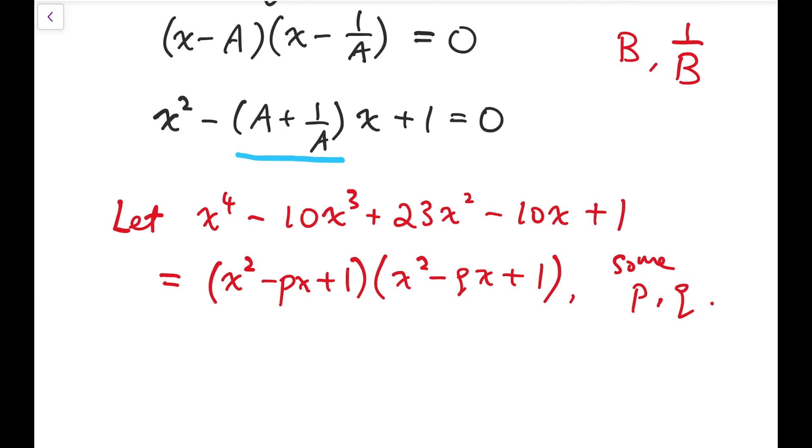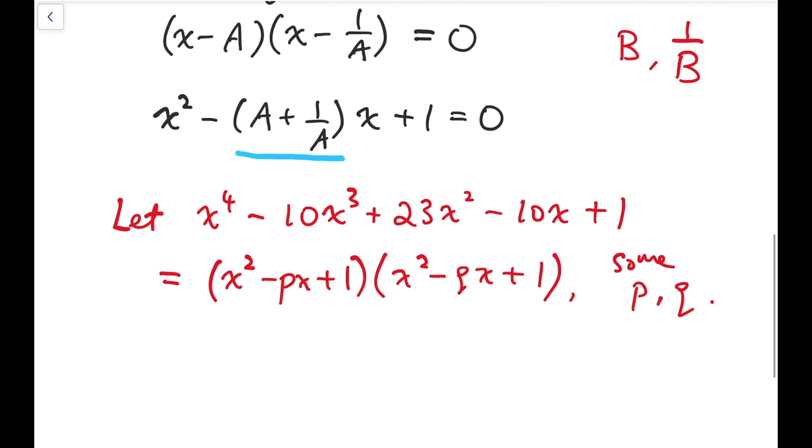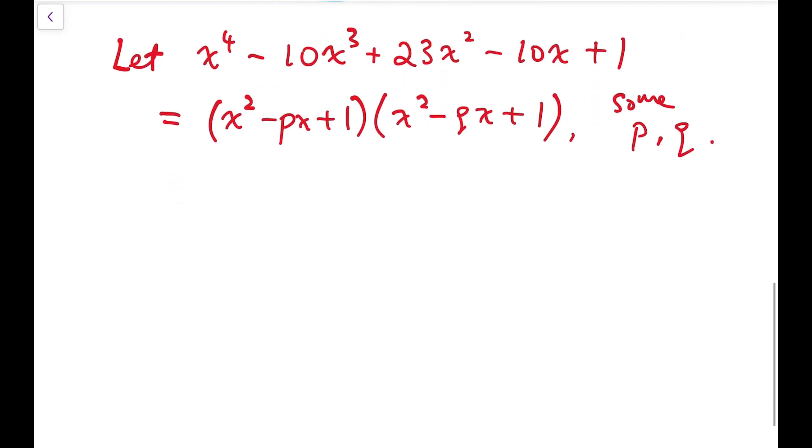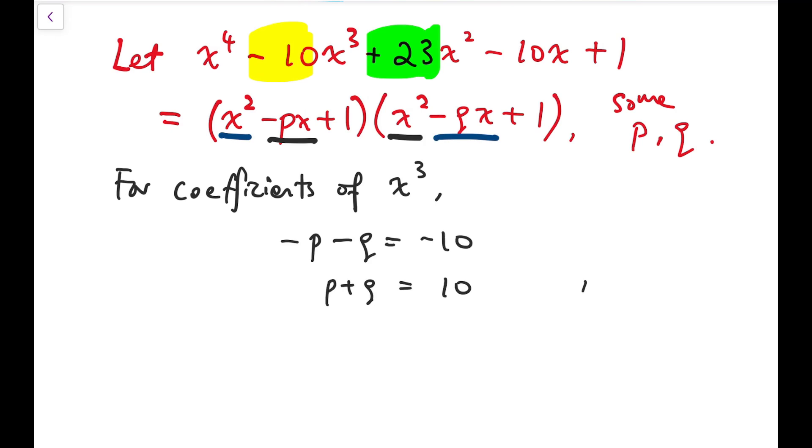So if we can solve for p and q, then it will be much easier to solve our quartic equation. What we need to do is to check the coefficients of x cubed, which is this one, and x squared, which is this one. So for coefficients of x cubed, it can be produced by multiplying minus px and x squared, or x squared and minus qx, so that means minus p minus q equals minus 10. So that means p plus q equals 10. That's the first relation on p and q.